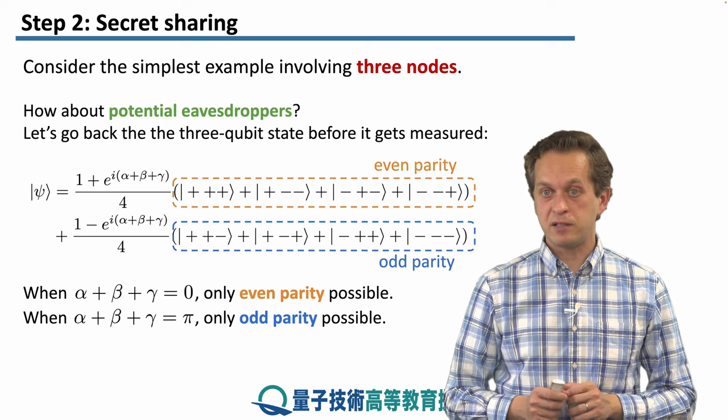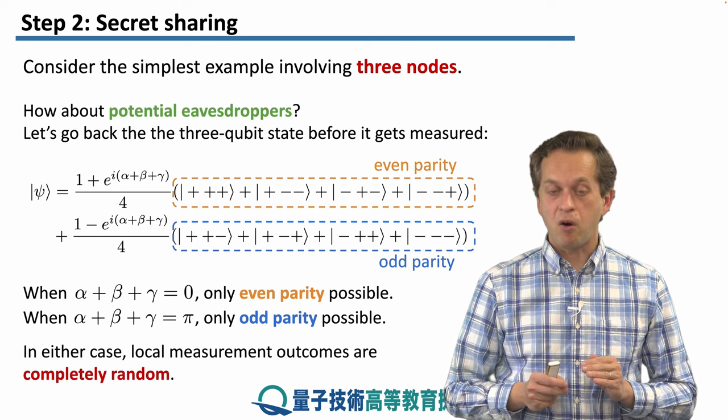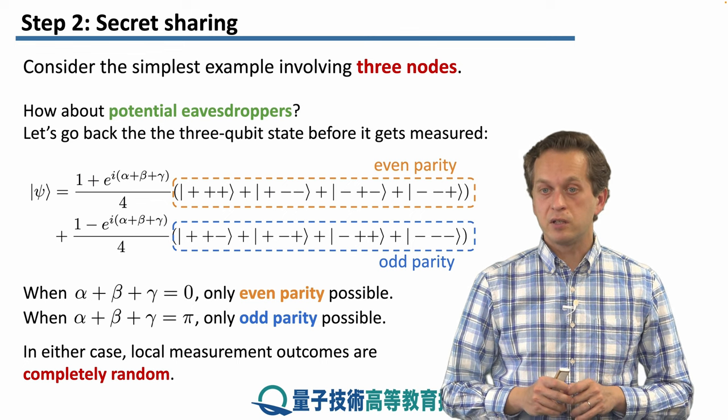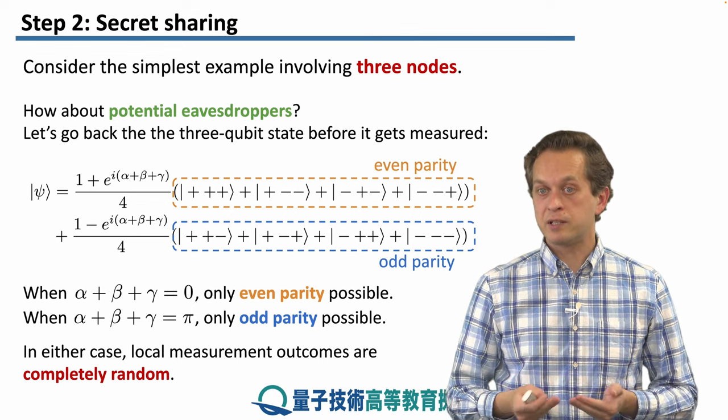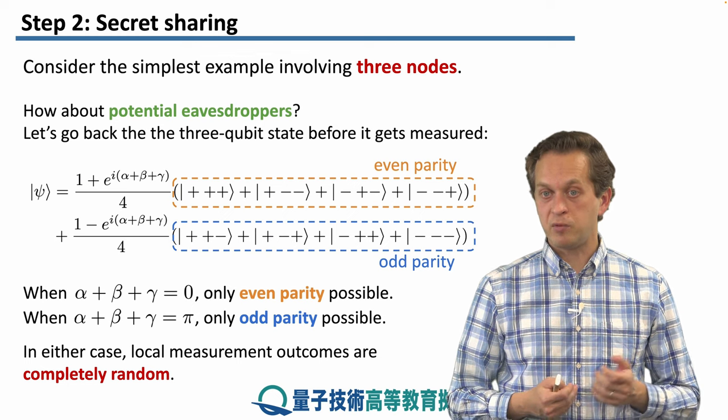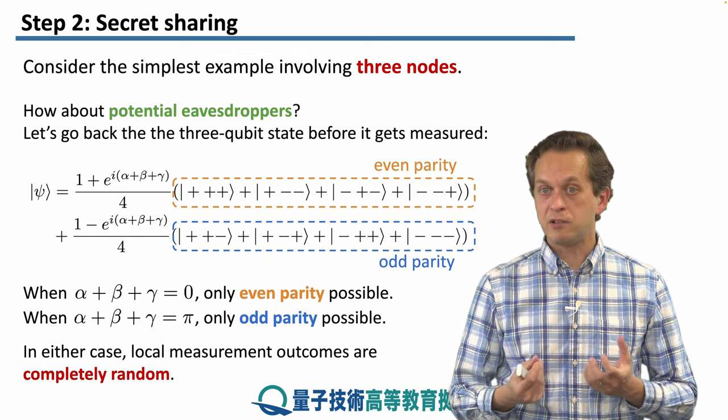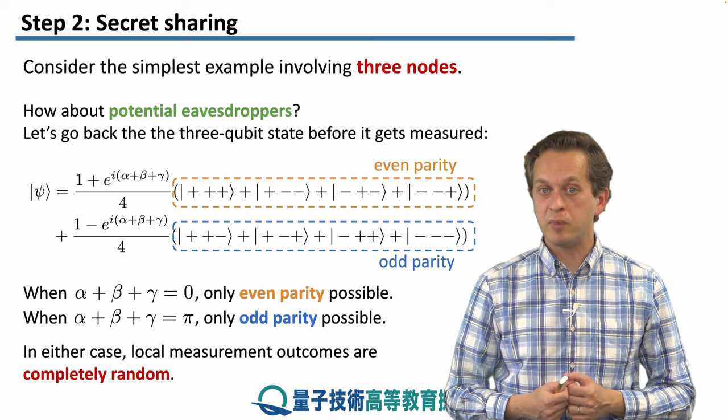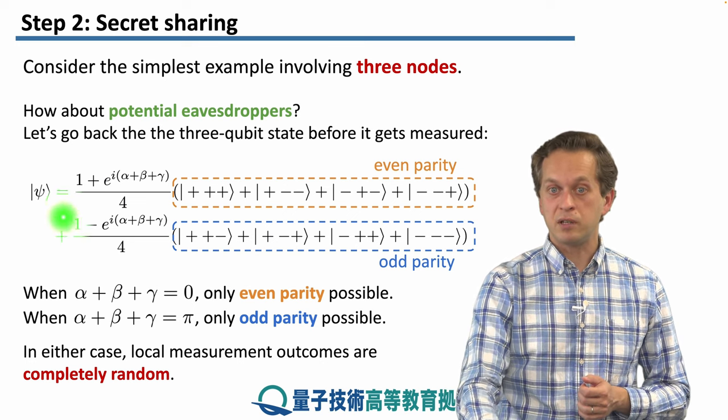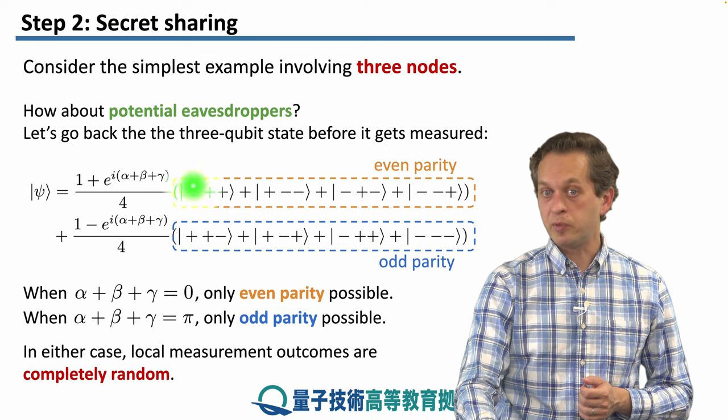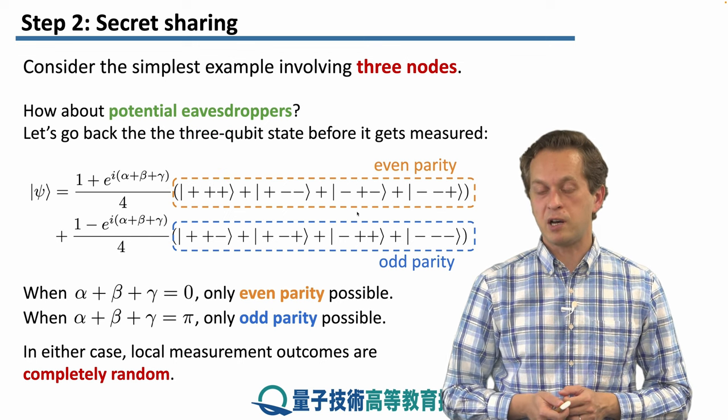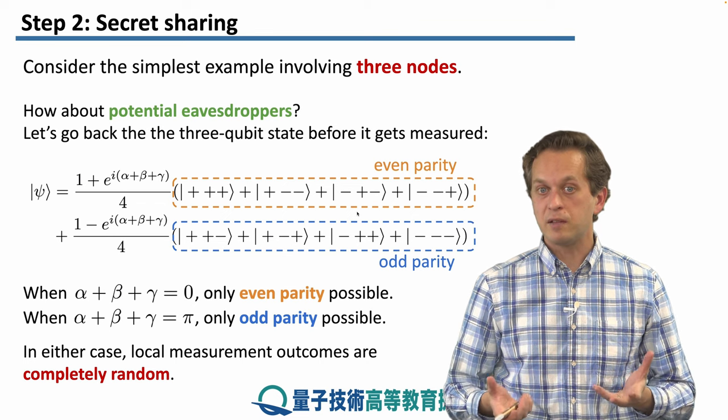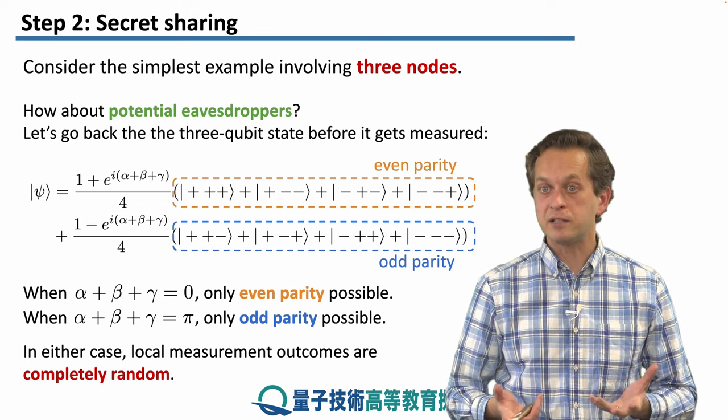But whichever case it is, whether the sum of the phases is zero or π, all of the local measurements are completely random. So any eavesdropper that's listening to the conversations between a, b, and c, and hears the announcement of α, β, γ, doesn't get any information about the measurement outcomes or the probabilities of the possible measurement outcomes when we measure the state. Meaning the eavesdropper doesn't learn anything about the secret.